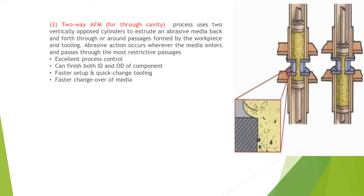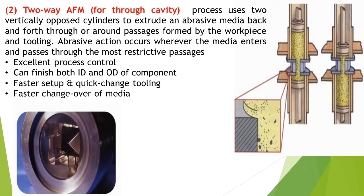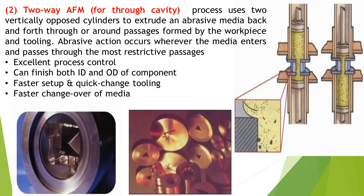The second type is two-way AFM, used for through cavity. In this process, two vertically opposite cylinders extrude an abrasive media back and forth through or around passages to modify the workpiece and tooling. Abrasive action occurs wherever the media enters and passes through the most restrictive passages. Advantages include excellent process control, ability to finish both ID and OD components, faster setup and quick-change tooling, and faster changeover of media. Examples include die and mold machining.